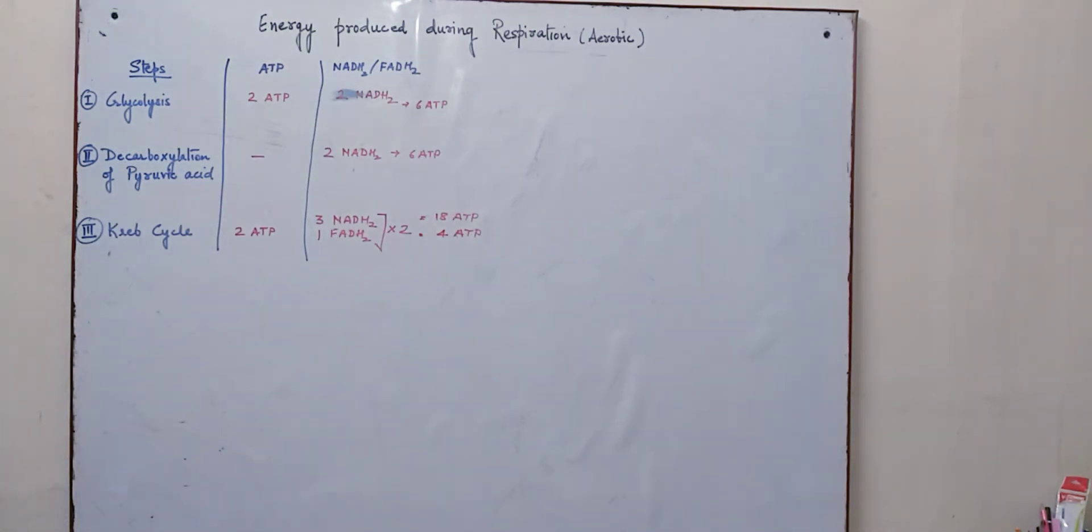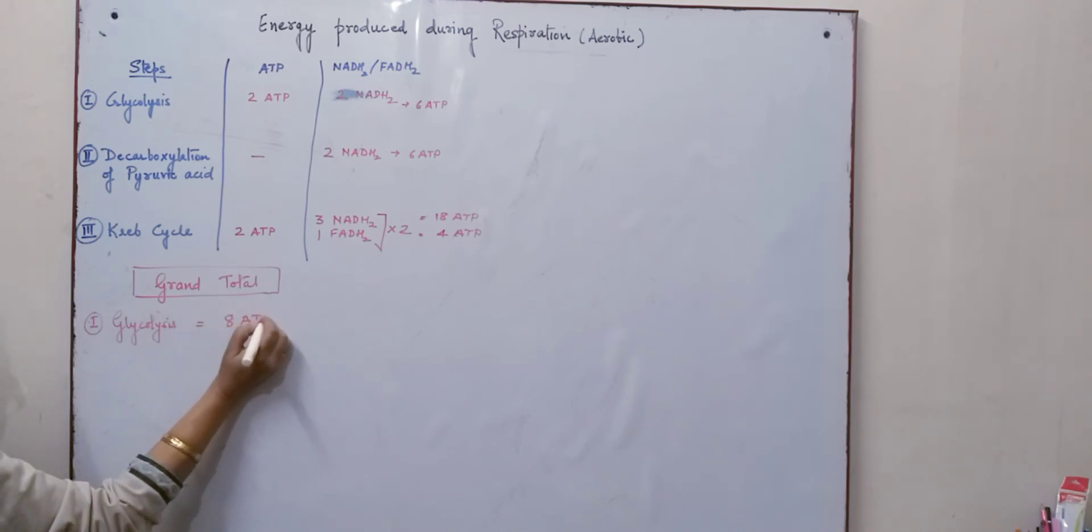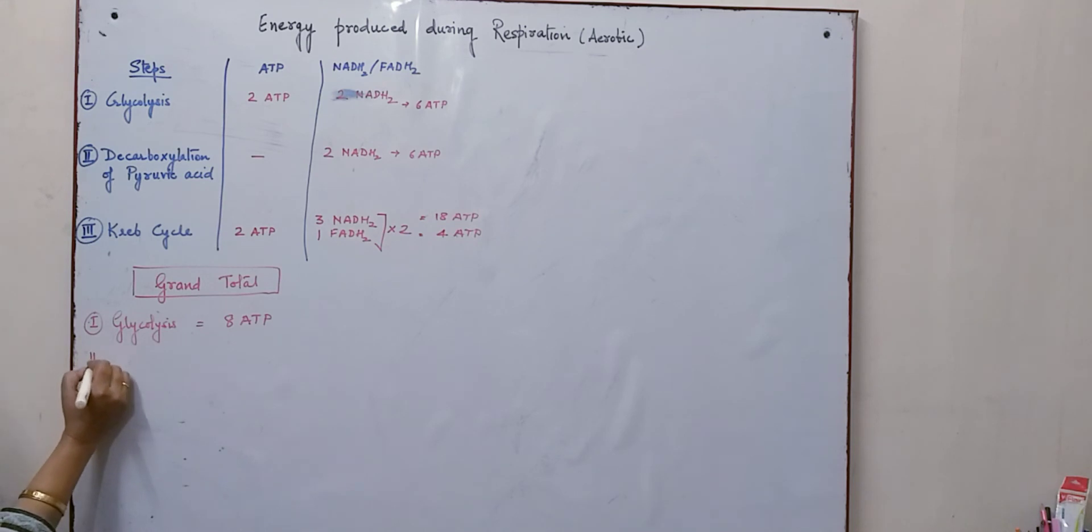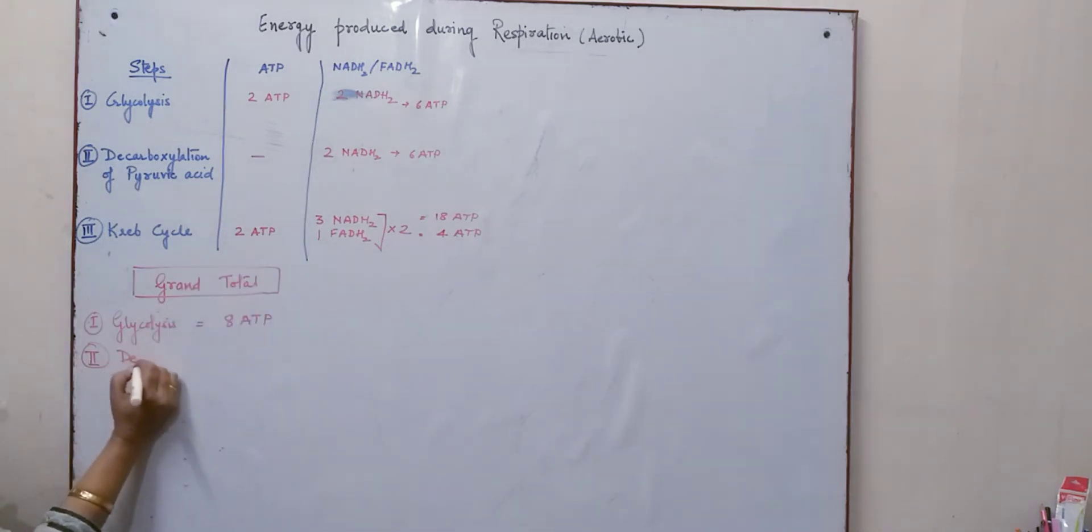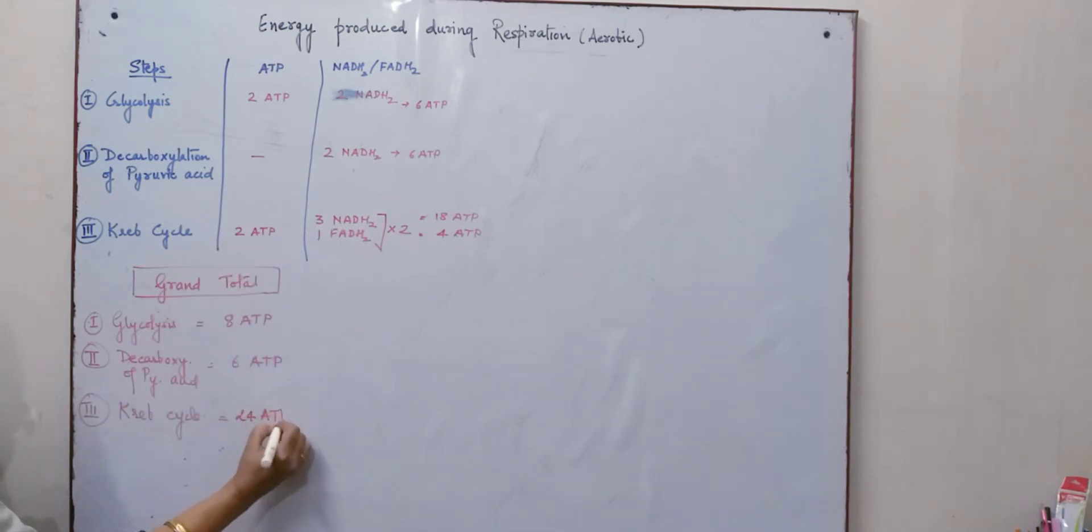So total gain over here is this balance sheet which we have got. Now let us do the grand total of each step. Now the first step is glycolysis. In glycolysis we have 2 ATP over here and 6 ATP that makes it 8 ATP during the process of glycolysis. The decarboxylation, the second step that is the decarboxylation of pyruvic acid gives us 6 ATP and the Krebs cycle that is the third step gives us 18 and 4 and 2 that makes it 24 ATPs during the Krebs cycle.